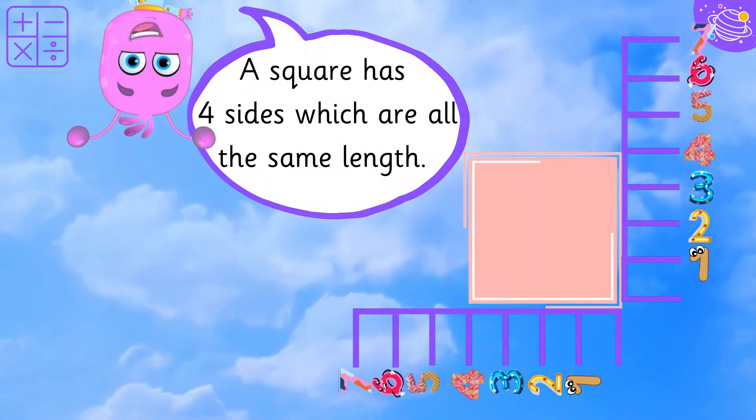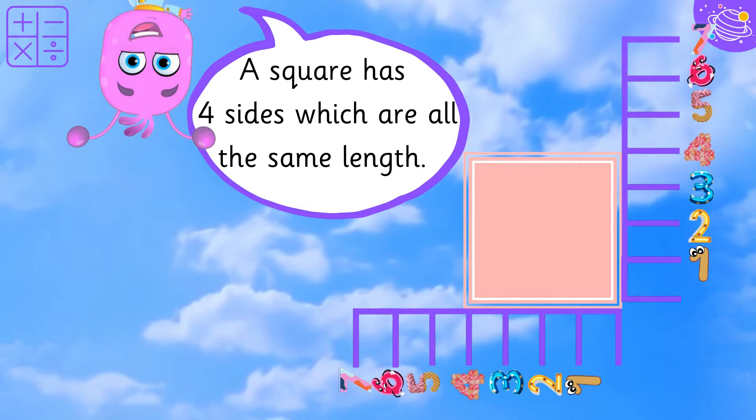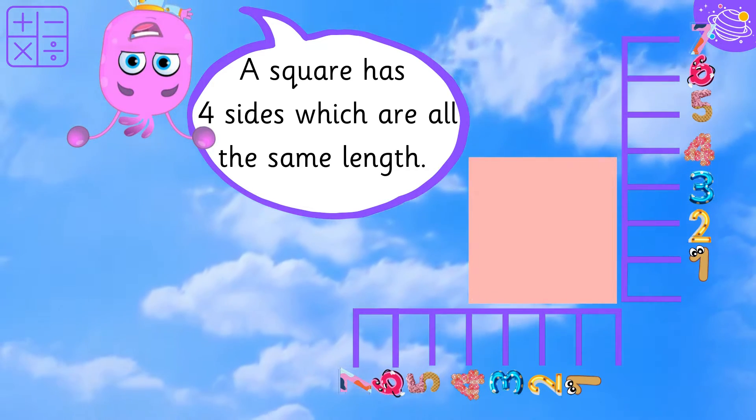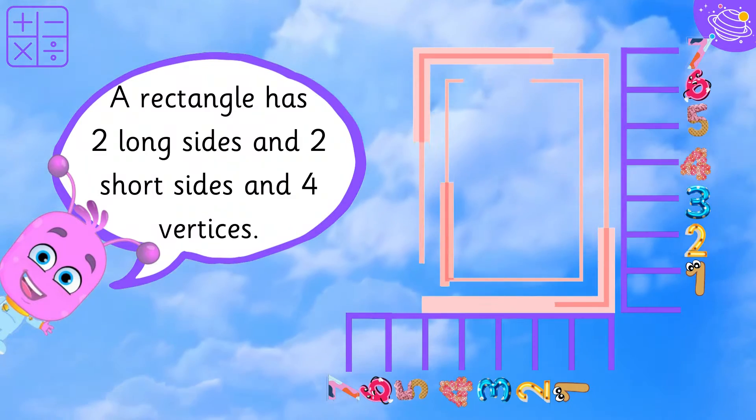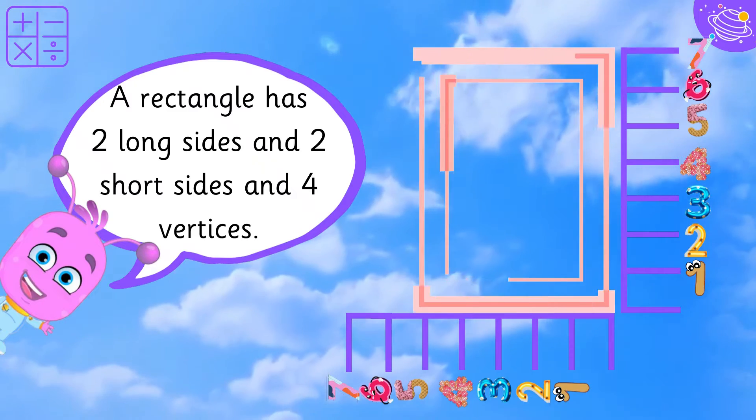A square has 4 sides which are all the same length. A rectangle has 2 long sides and 2 short sides and 4 vertices.